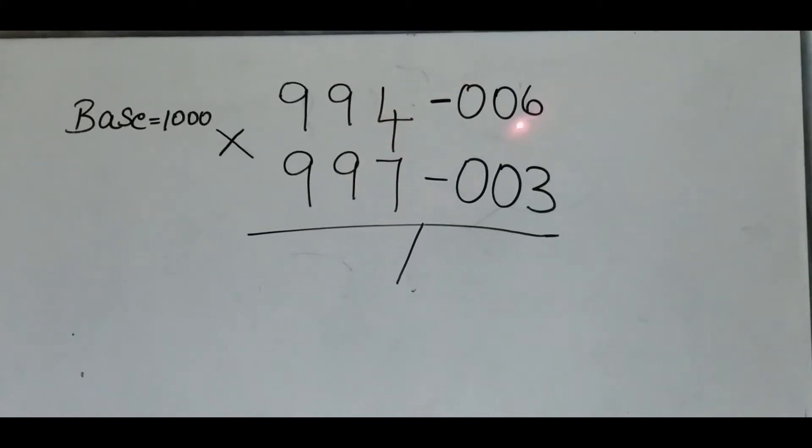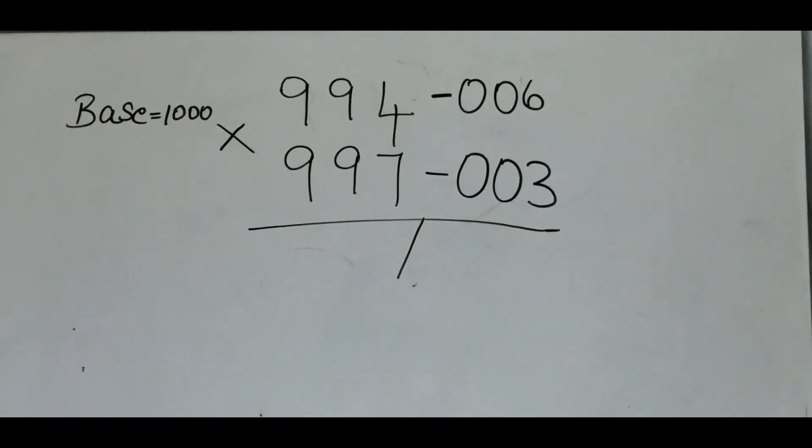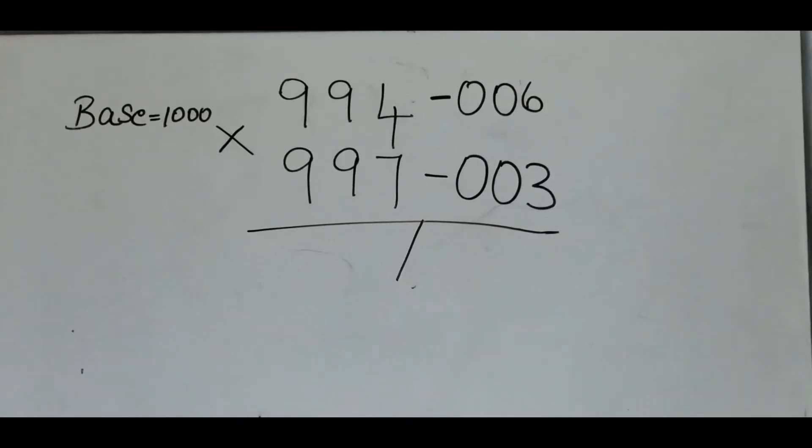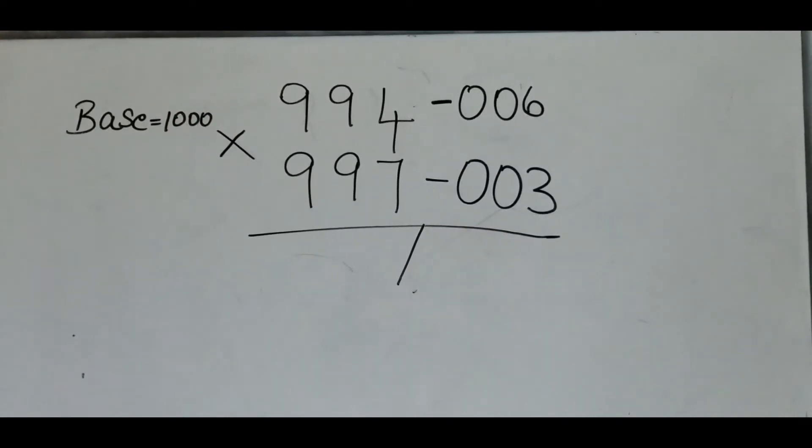Now multiply 6 times 3. 6 times 3 is 18. Write 18 over here. Put a 0 over here because the base is 1000. Since there are supposed to be 3 digits, that's why we added a 0.